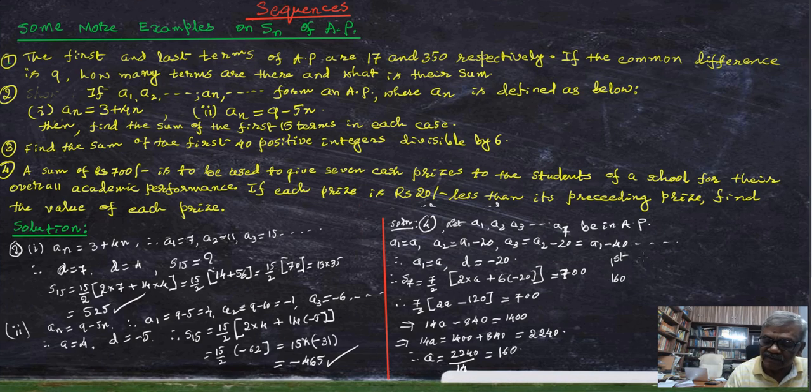Therefore, a is 160, and therefore the price, the first price is 160, second price is 140, third 120, fourth 100, fifth 80, sixth 60.